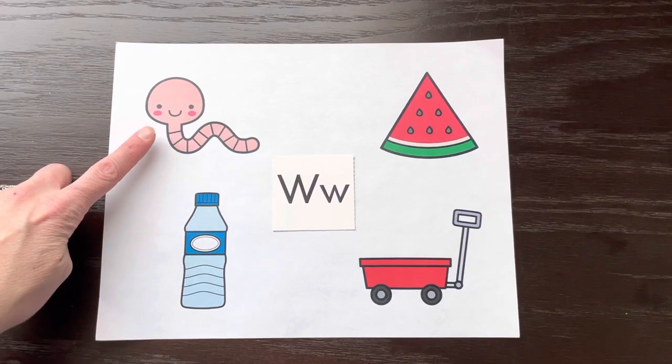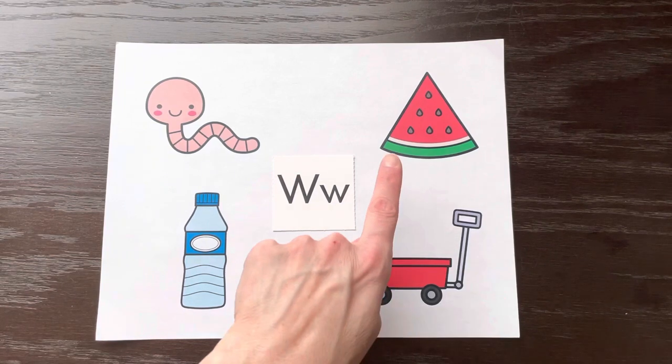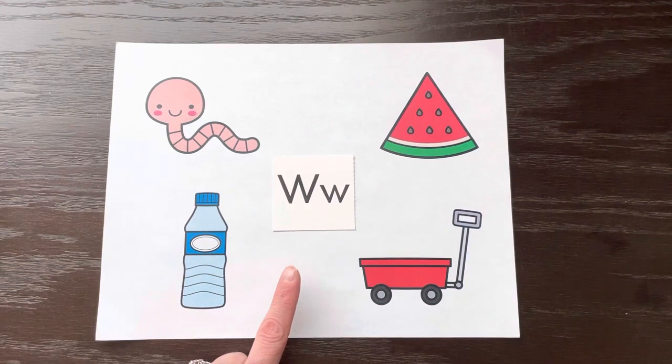W-worm, w-water, w-wagon, w-watermelon. The letter W makes the w sound.